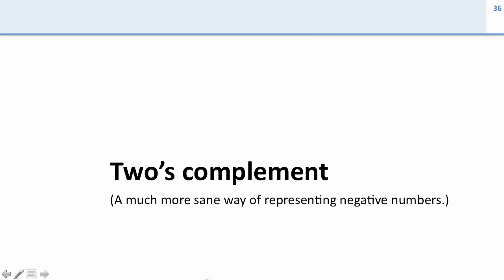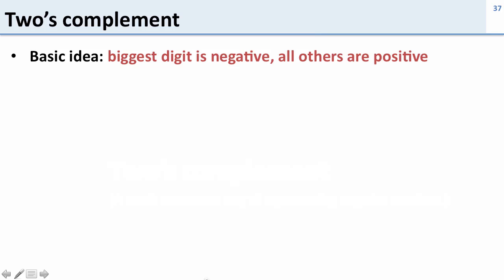Now we're going to talk about 2's complement. 2's complement is the standard way of representing negative numbers, and we use it because it makes addition and subtraction the same. So it makes it easy to do operations regardless of whether a number is positive or negative. The basic idea in 2's complement is that the biggest digit is negative and all the others are positive.